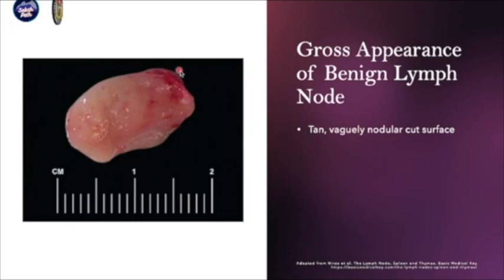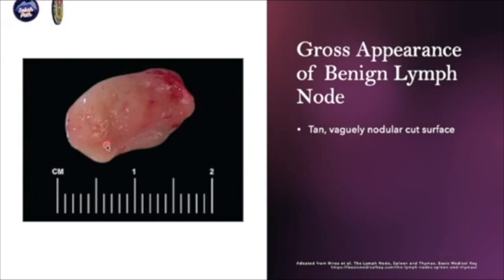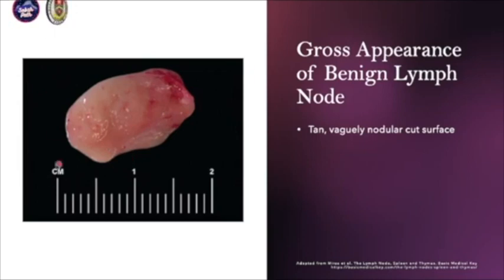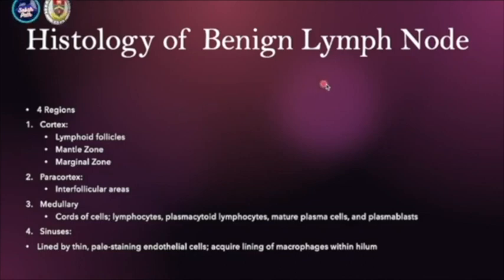As you can see, this lymph node appears thinly nodular — it's about 1.5 to 1.7 centimeters. Usually for a normal lymph node, it will be less than 1 cm. If any lymph node is more than 1 cm, it is usually pathological, but pathological doesn't mean it's always malignant — it can be benign, like this picture in front of you. This is a benign reactive lymph node in a child.